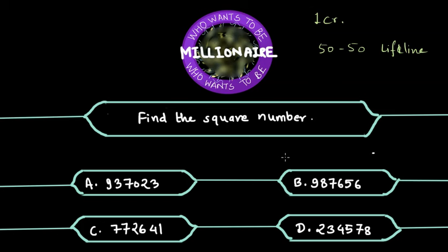But still you don't really know which could be the answer here. And now we have to make a choice whether to leave the question, get away with whatever money that you've won, or just try this question out and win one crore. Let's see if we can observe something about the square numbers, particularly what number appears at the end in the square numbers.